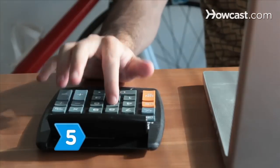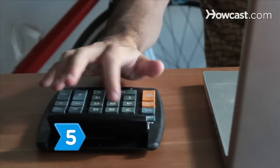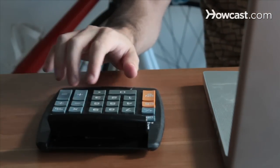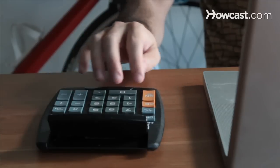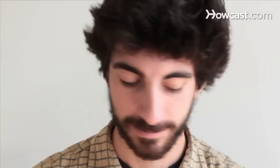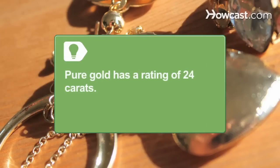Step 5: Multiply the weight of your scrap gold by its carat value and then divide by 24. This is the number of grams of pure gold that you have. Pure gold has a rating of 24 carats. 22 carat gold is 22/24ths parts pure gold, 18 carat gold is 18/24ths parts pure gold, and 9 carat gold is 9/24ths parts pure gold.